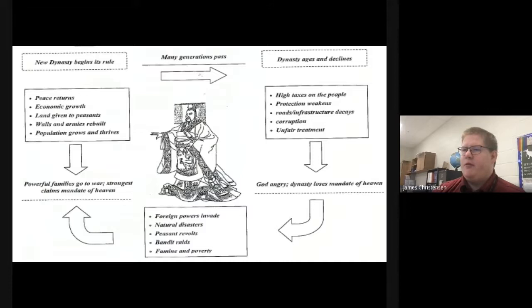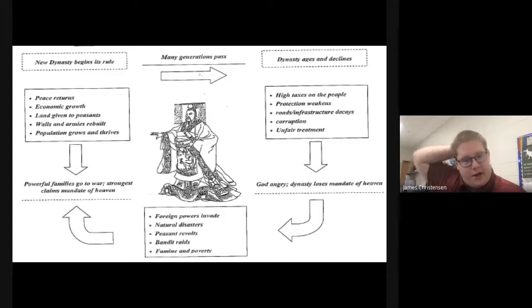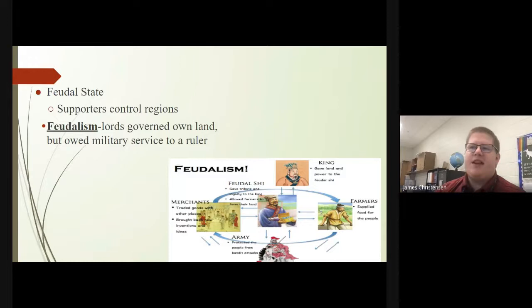Here's a great example of what the dynastic cycle looks like. It begins with a new dynasty starting its rule. Generations pass, and it becomes aged and declines — usually signaled by higher taxes, weakened protection, decay of infrastructure, and corruption. As a result, God would become angry and take away the Mandate of Heaven, bad things would happen, and a new dynasty would rise to take its place.